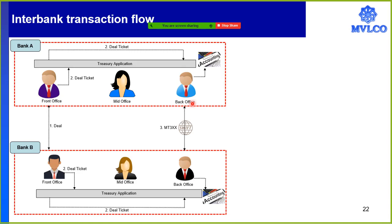At each of the back offices, we have a deal ticket received from our own front office, and a confirmation message which has come from the counterparty's back office. As a back office officer, I have two documents in front of me: my own bank's deal ticket and the counterparty bank's confirmation message. I will compare both of them — ideally they must match. If they match, I enter the deal in my accounting system. This deal may involve delivery of currency today or tomorrow, or delivery of a security. We do this deal directly between two banks — this is an over-the-counter deal, not exchange-traded.